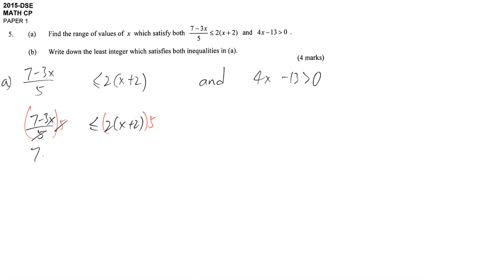5 divided by 5 gives 7 minus 3x. 5 times 2 gives 10, times x plus 2. Finally, we remove the bracket also.